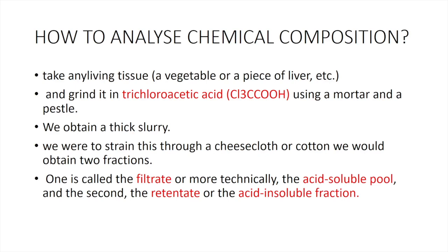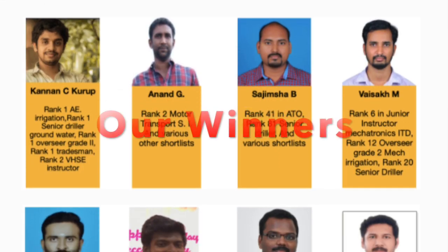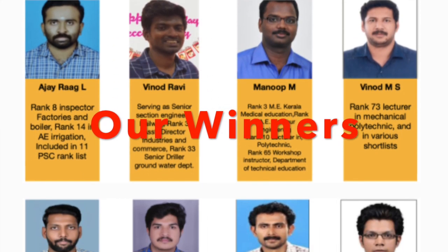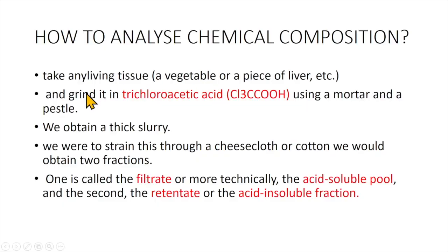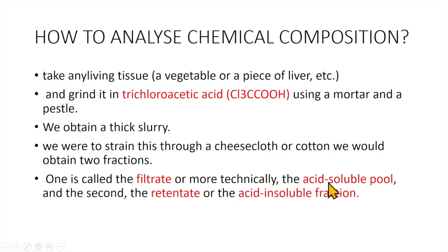First, to identify the biomolecules we have to analyze the chemical composition. So let's take any living tissue — it can be an animal tissue like a piece of liver, or a plant tissue such as a vegetable. It should be ground in trichloroacetic acid using mortar and pestle and we will obtain a thick slurry. This slurry has to be strained through a cheese cloth or cotton cloth and we will get two fractions: one is the filtrate or more technically the acid soluble pool, and the second is the retinate or acid insoluble fraction.